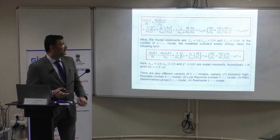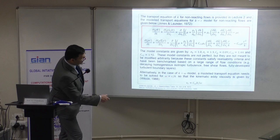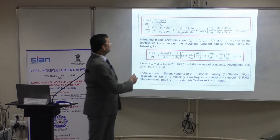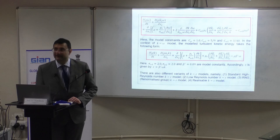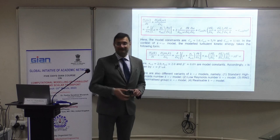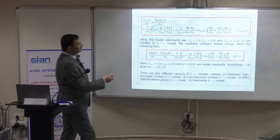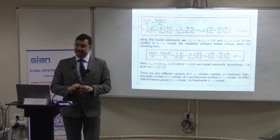If you start from the k and epsilon equations and derive a model transport equation for epsilon / k, you get a transport equation for omega. Instead of solving for epsilon, you solve for omega. The model parameters for k-omega follow the same cautionary remarks I made for k-epsilon — model constants are not universal. In this formulation, the molecular dissipation term is now written in terms of omega.